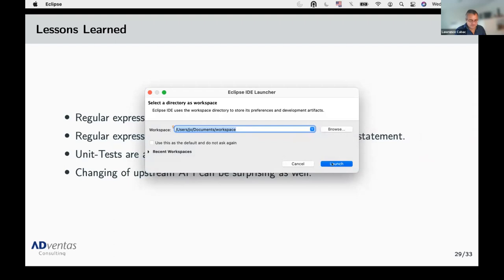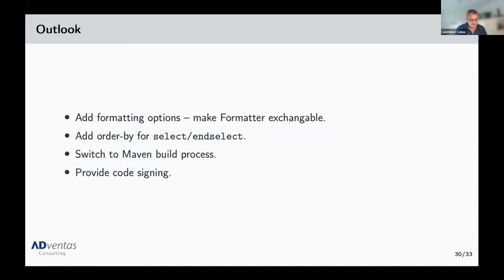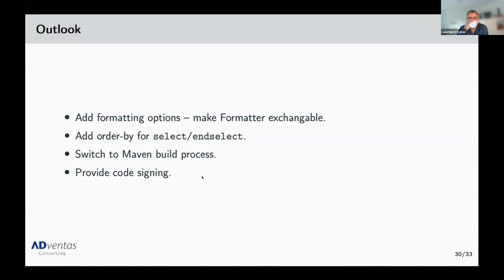For future work: formatting options would be nice, so the formatter could be replaced with another one. I'd also like to extend the list of ORDER BY sequences if anyone has suggestions — I don't work in all SAP modules. Adding another quick fix for SELECT and SELECT INTO might also be useful sometimes. And in general I'd like to switch to a Maven build process and provide code signing.